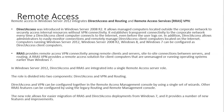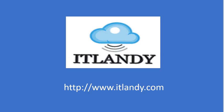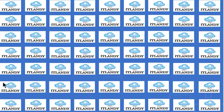In Windows Server 2012, DirectAccess and RRAS are integrated into a single Remote Access server role, divided into two components: DA and VPN, and Routing. DirectAccess and VPN can be configured together in the Remote Access Management Console using a single set of wizards. Other RRAS features can be configured using the legacy Routing and Remote Management Console. This allows for easier integration or migration of RRAS and DirectAccess deployments from Windows 7, providing a number of new features and improvements.